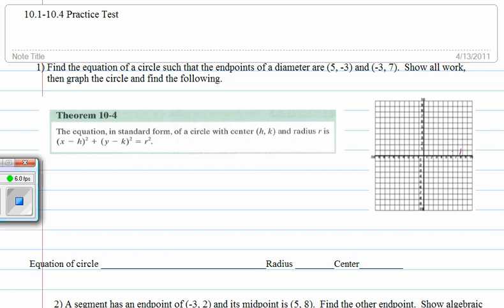All right, we're going to do number 1 on 10-1 to 10-4 practice tests. Here they've asked us to find an equation of a circle given the endpoints of one of the diameters.